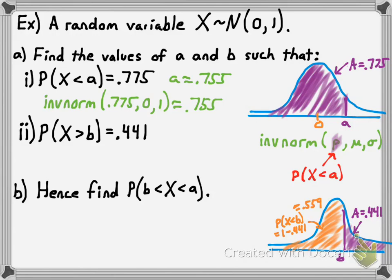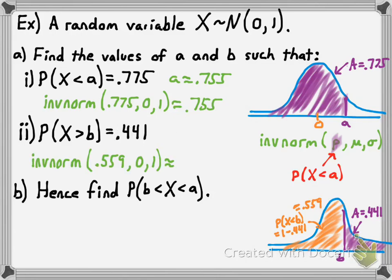So we type into our calculator: inverse norm of 0.559, comma 0, comma 1, which gives approximately 0.148. So b is approximately 0.148.